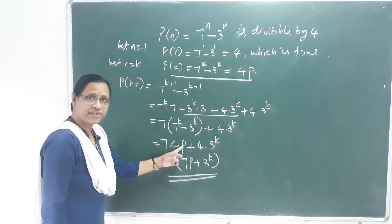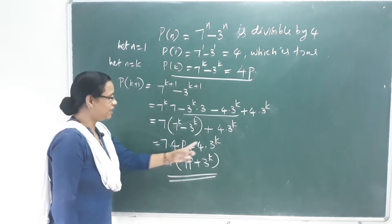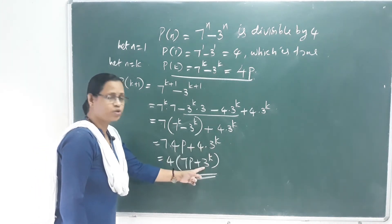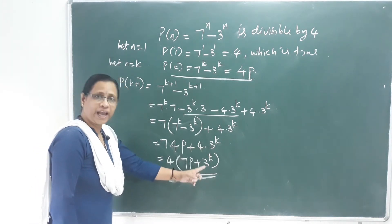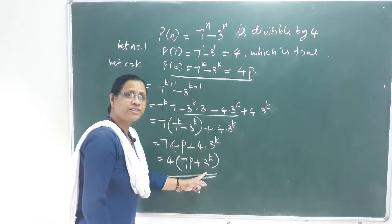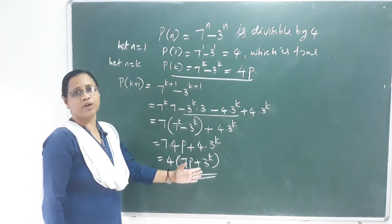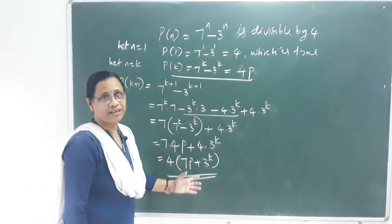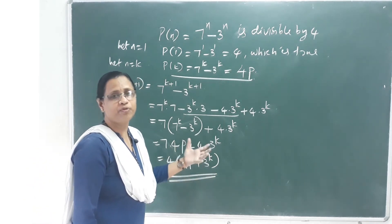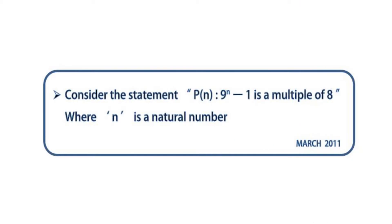The balance is 7p plus 3 raised to k. Hence, mathematical induction is proved for all natural numbers. N is an element of N.